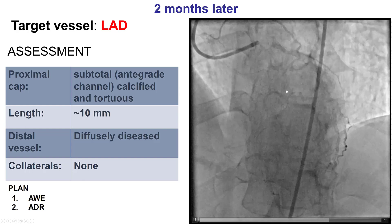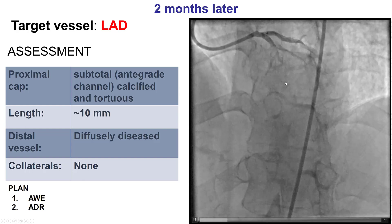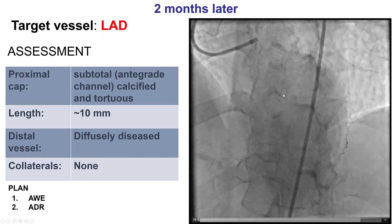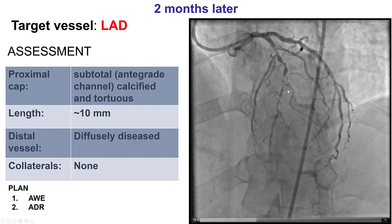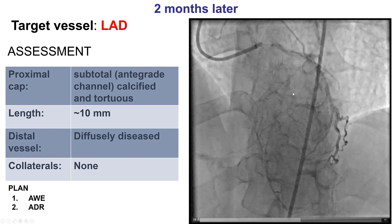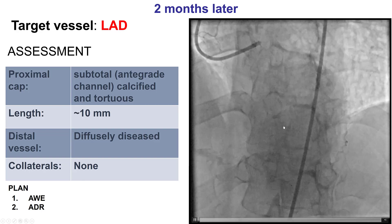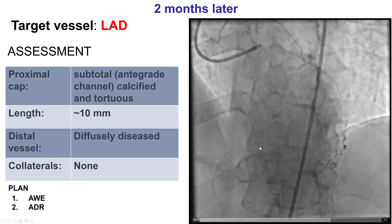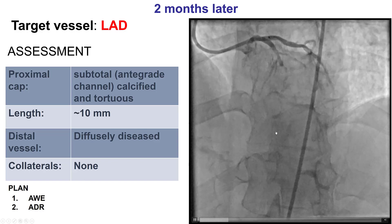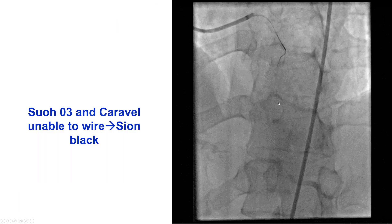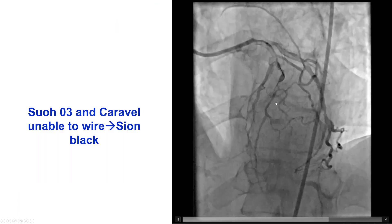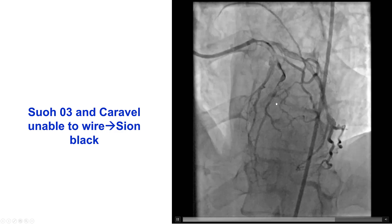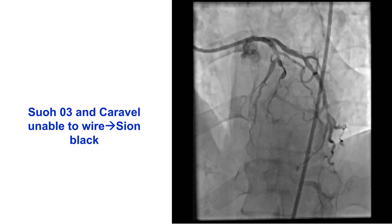He still has a heavily calcified, tortuous, and eccentric lesion in the mid-LAD with a diagonal branch that originates right at the occlusion. The distal vessel was small and diffusely diseased. Our plan was to try different techniques to cross this lesion and recanalize the vessel, while minimizing the risk of having acute vessel closure again.